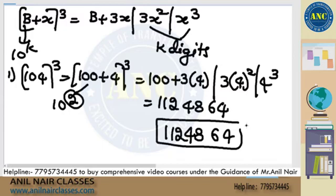100 plus 4 whole cube. B plus 3x, 3x square and x cube. 4 cube 64, 48, 112. Last two places should have two digits. So 112, 48, 64. What is the next number?